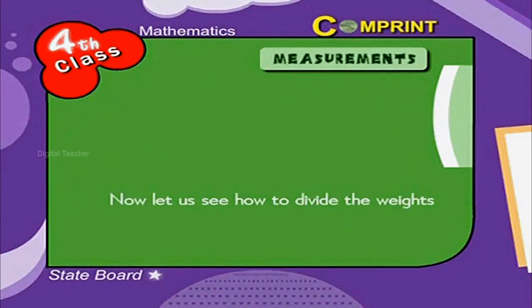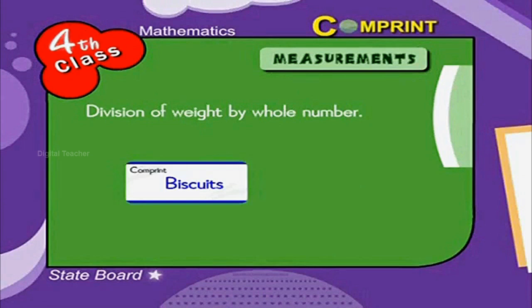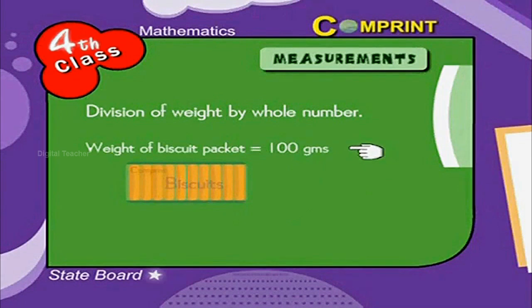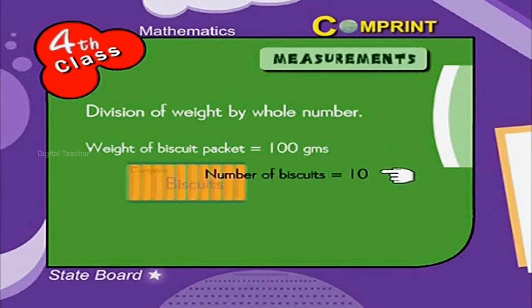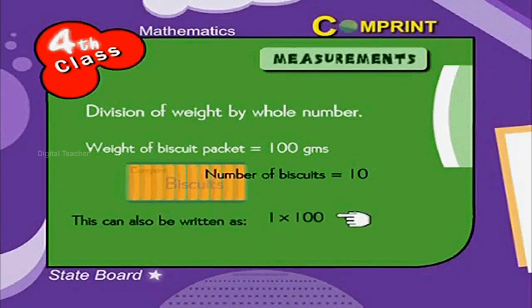Now let us see how to divide weights. Division of weight by a whole number — here is an example. A biscuit packet contains 10 pieces and weighs 100 grams. What is the weight of each biscuit? Weight of biscuit packet equals 100 grams. Number of biscuits equals 10. Weight of each biscuit is 100 divided by 10, which equals 10 grams.